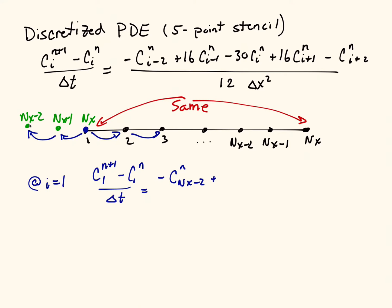Plus 16 times ci minus 1. Well, that's the point just to my left, which is just nx minus 1. So this is 16 times cnx-1, evaluated at the nth time.